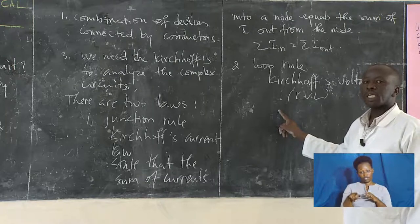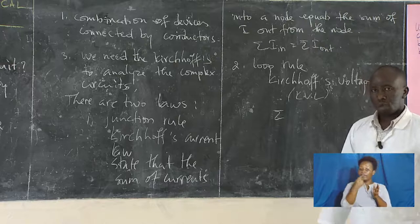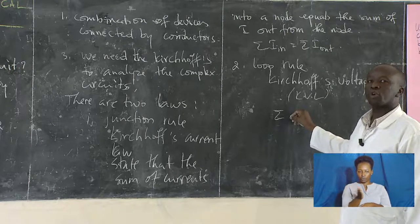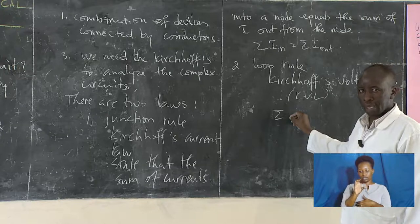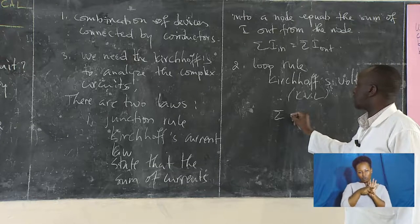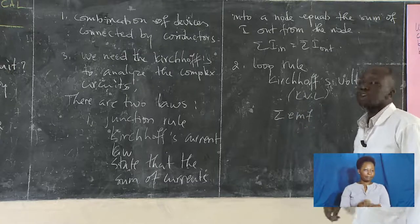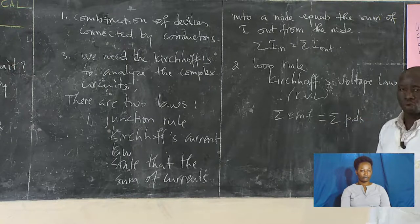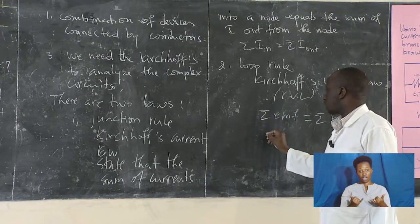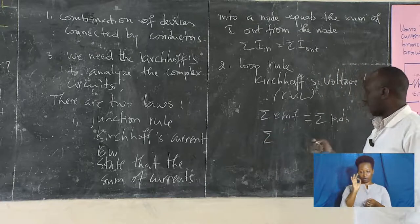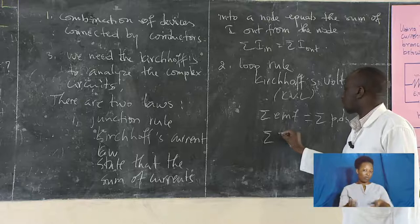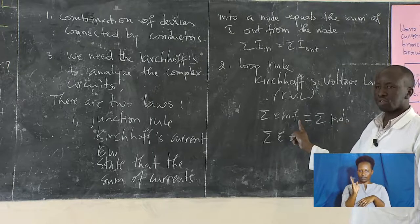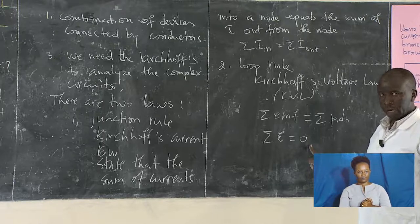The voltage law states that the sum of EMF in the circuit equals the sum of potential differences we have in the network. What I'm saying is that the sum of the electromagnetic forces around a given network equals zero — meaning what you have on one side is also on the other side. I hope you understand this.